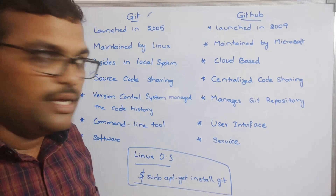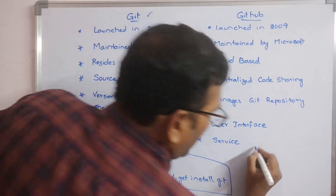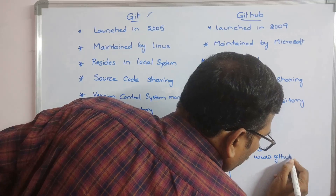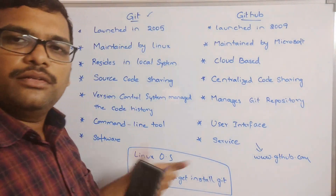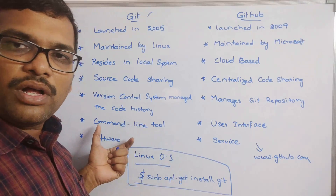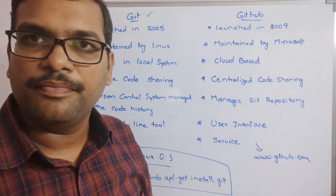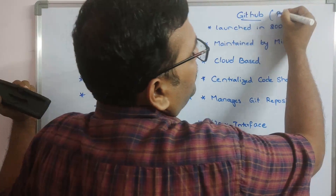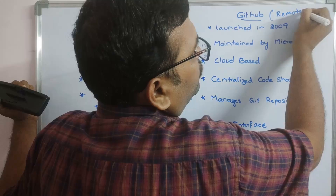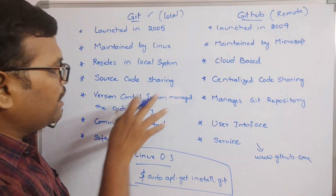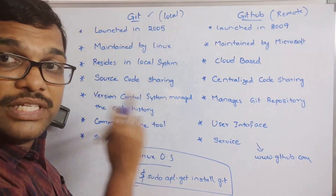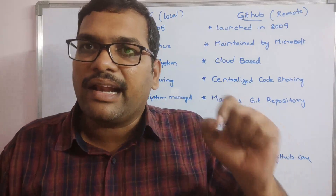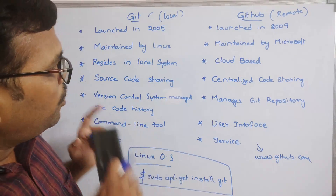GitHub is a web host or web space — we can access it at www.github.com. There we can store all the local repository files to the remote. We usually call Git the local side and GitHub the remote side — so Git holds the local repository and GitHub holds the remote repository.